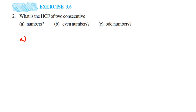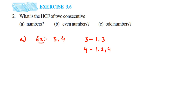So let us take an example of 3 and 4 — this is an example of two consecutive numbers. Now HCF is nothing but Highest Common Factor. The factors of 3 are 1 and 3. The factors of 4 are 1, 2, and 4.